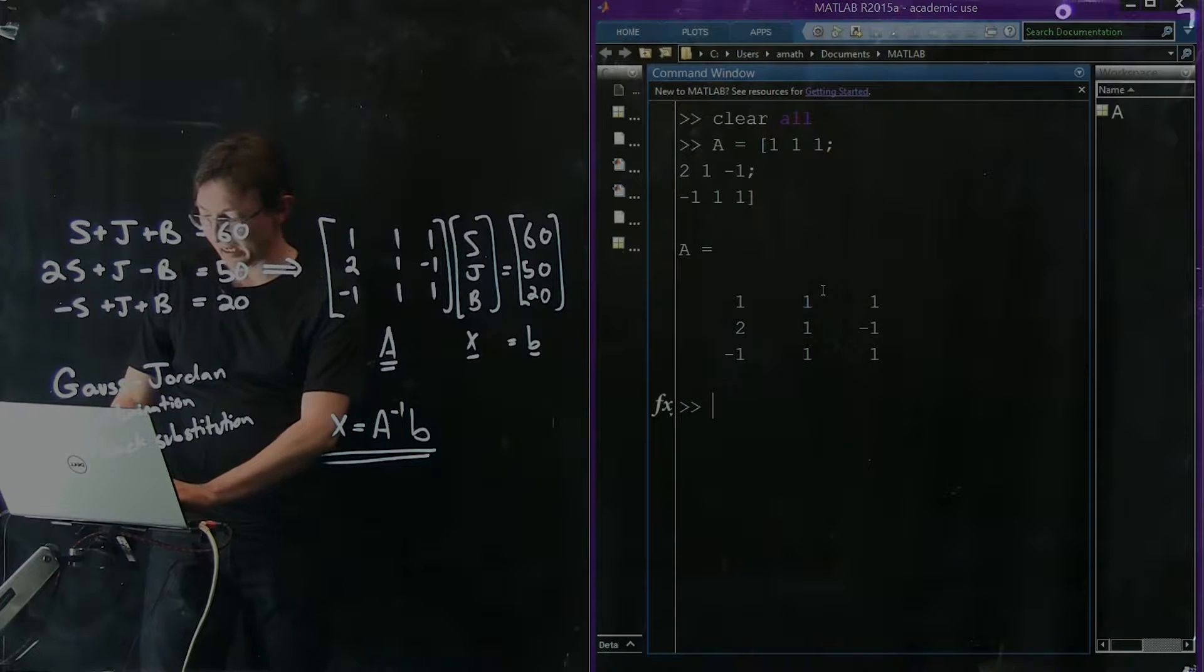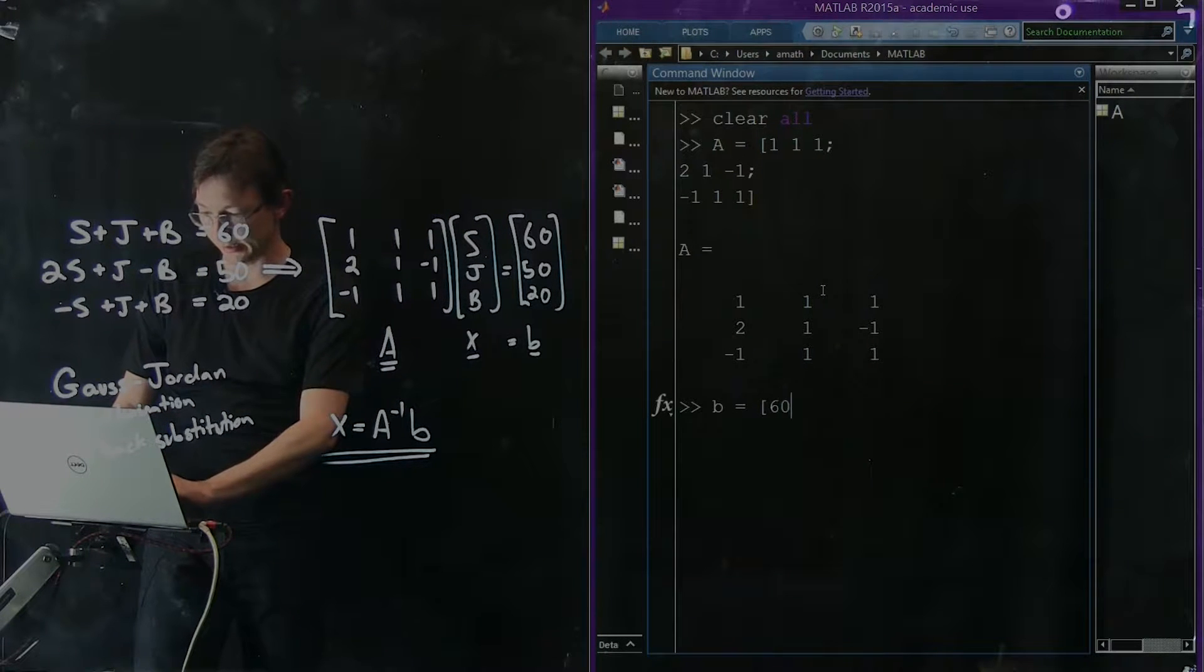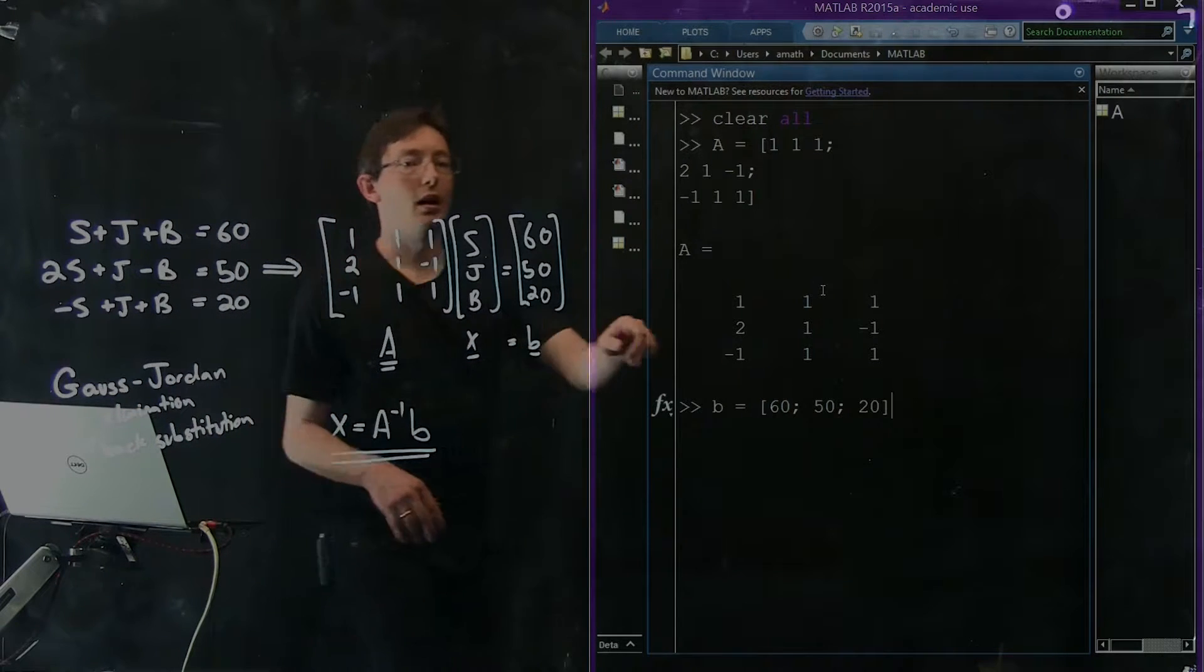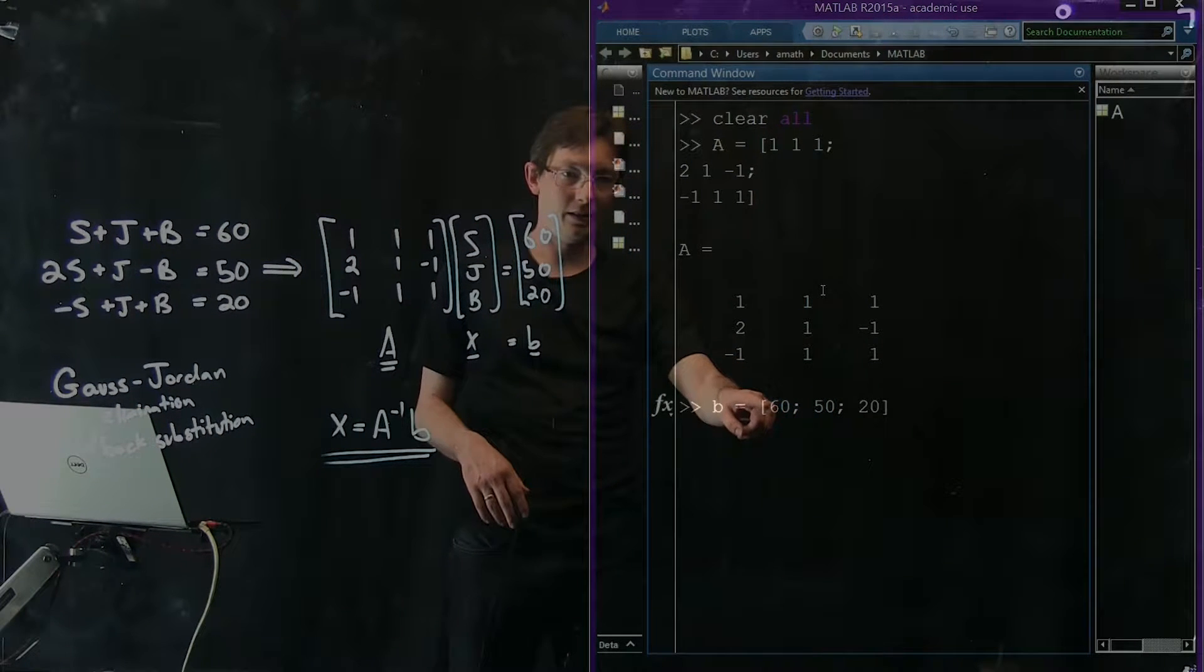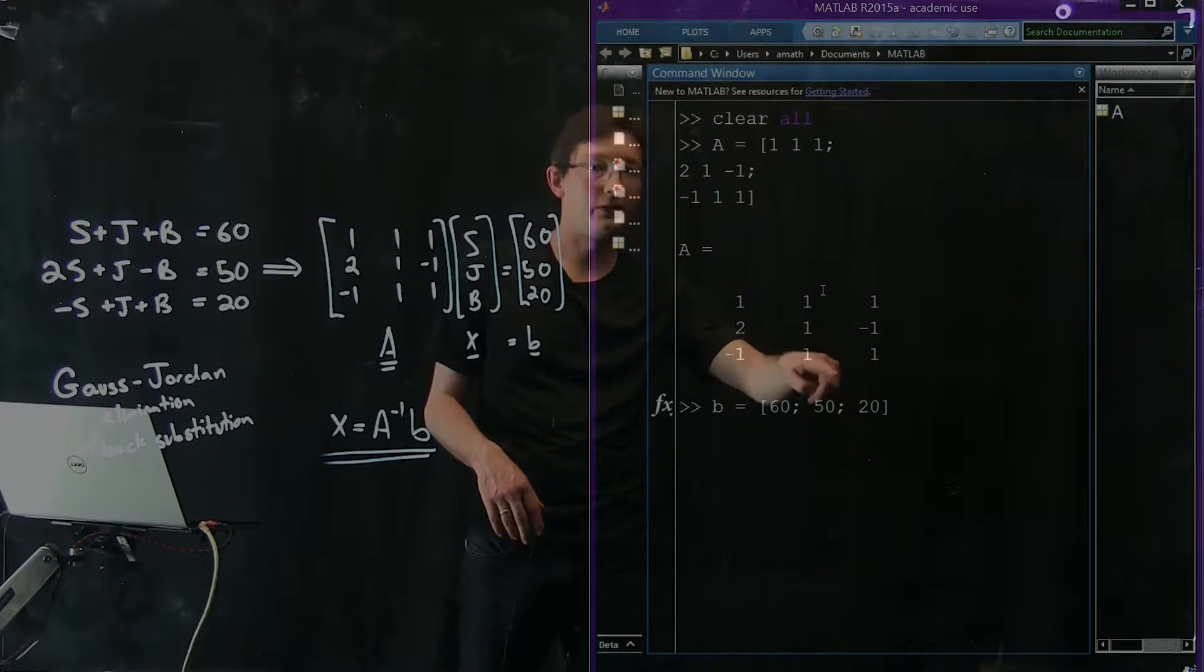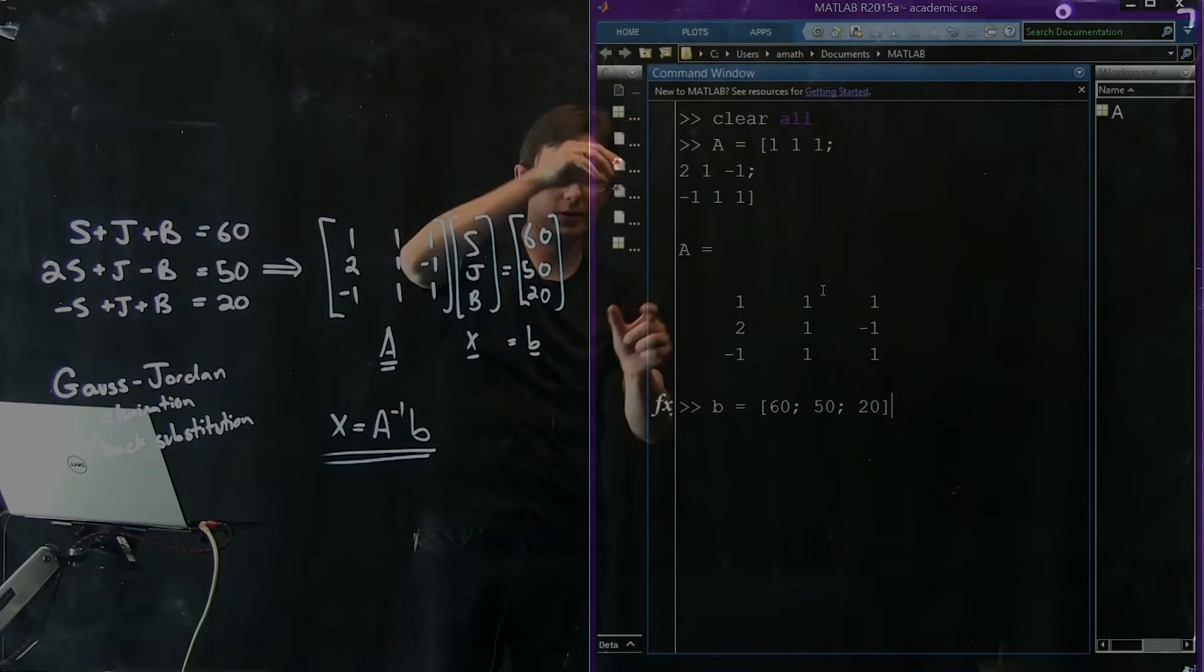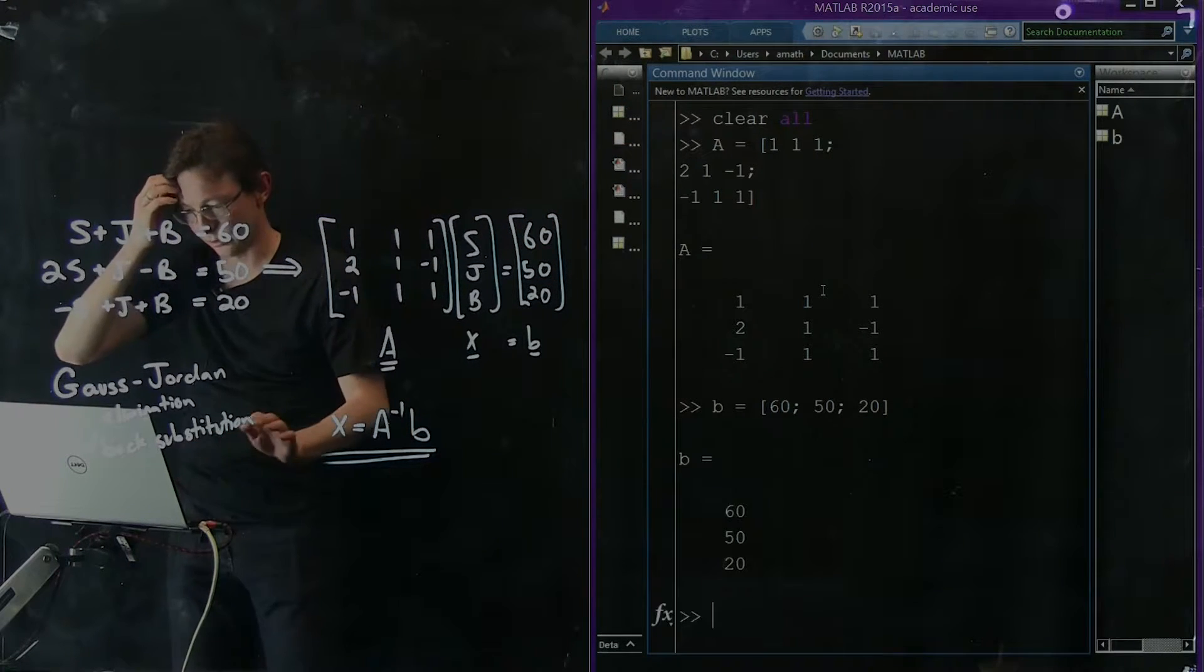Now I want to enter my B vector. B equals 60, semicolon, 50, semicolon, 20. I can write 60 semicolon 50 semicolon 20, and MATLAB knows that's a column vector: 60, 50, 20.